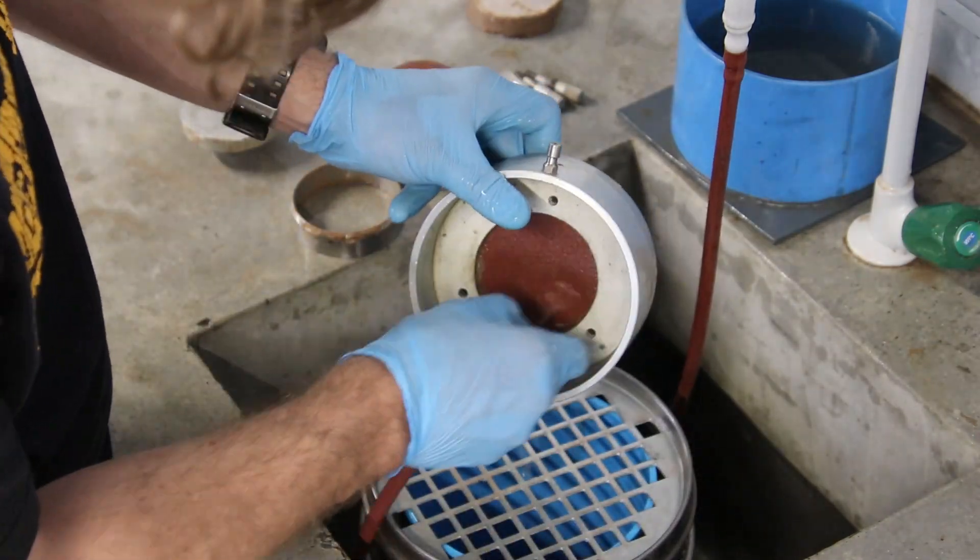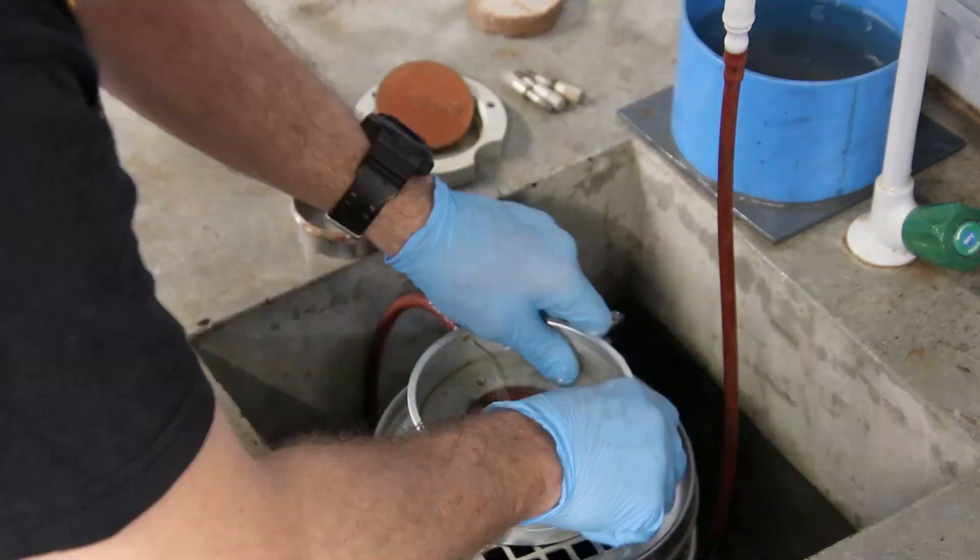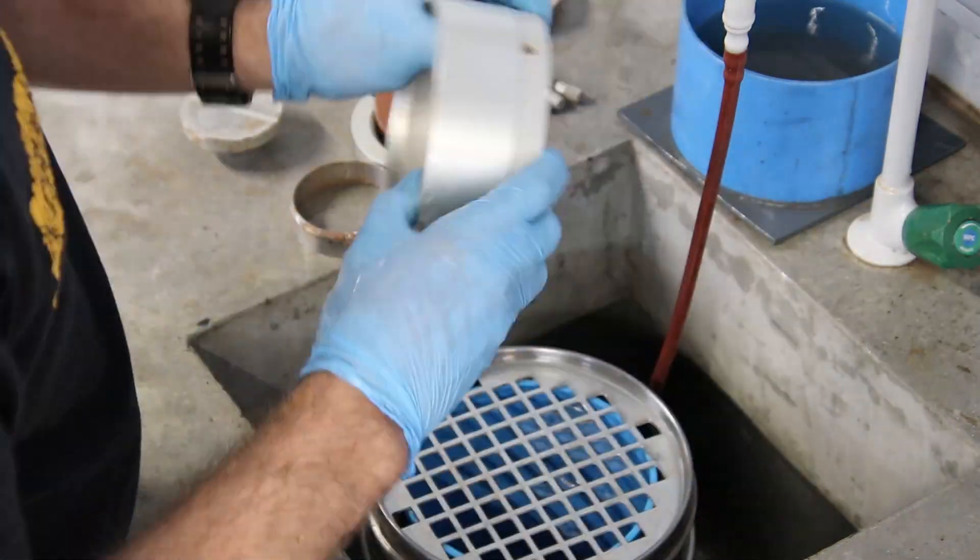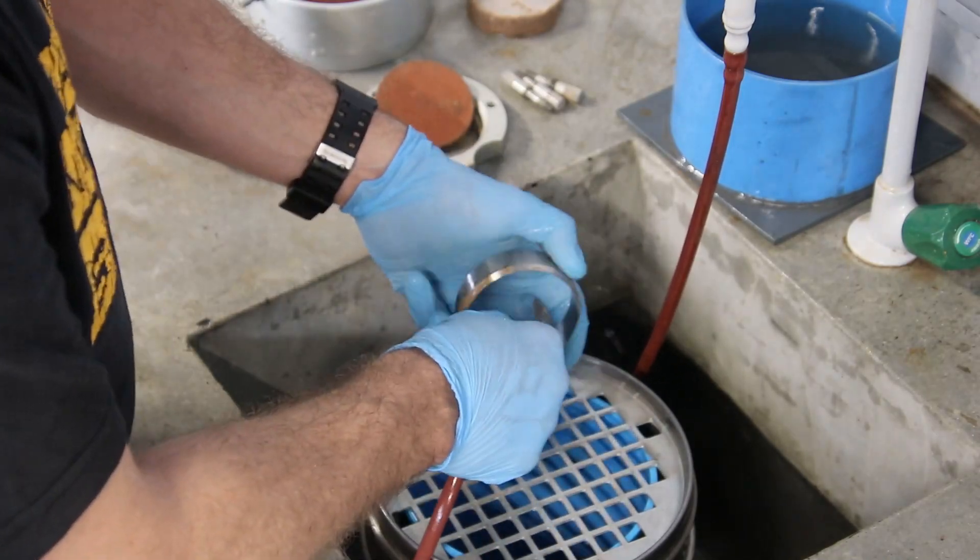If the sample should break or fall apart, gather all the material into a miter box and weigh it, including the confining ring. After you have weighed your sample, place it in the oven to dry out.